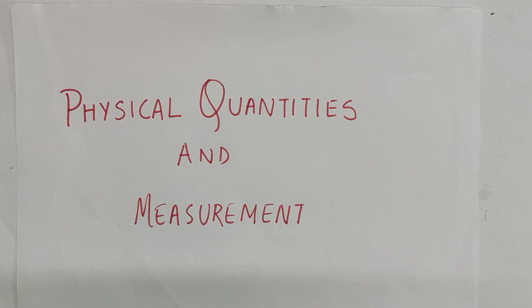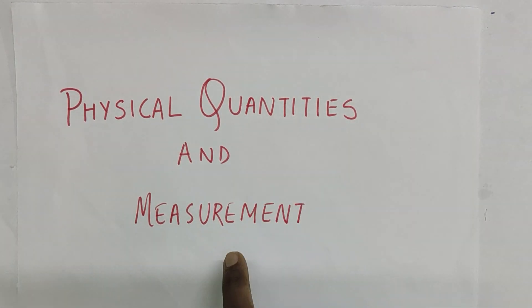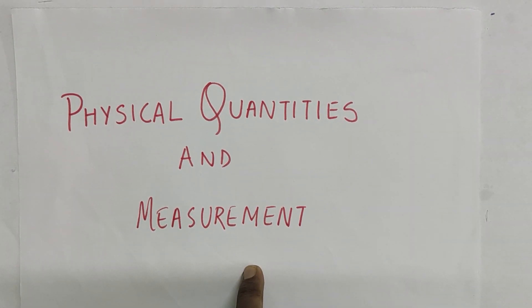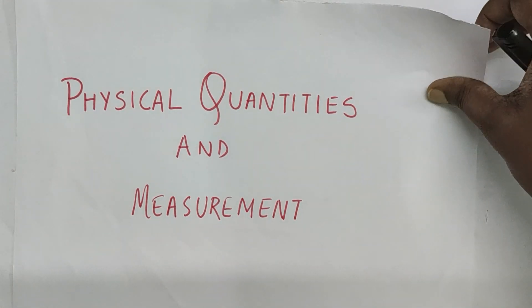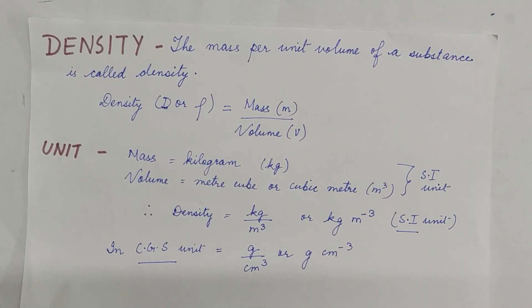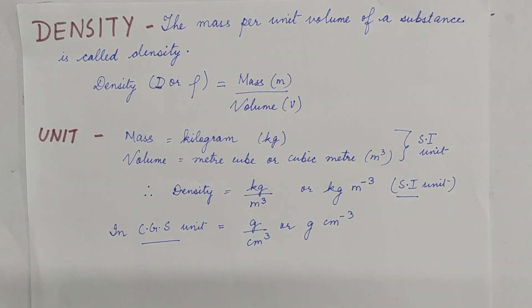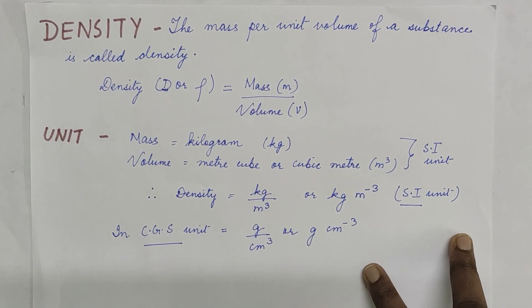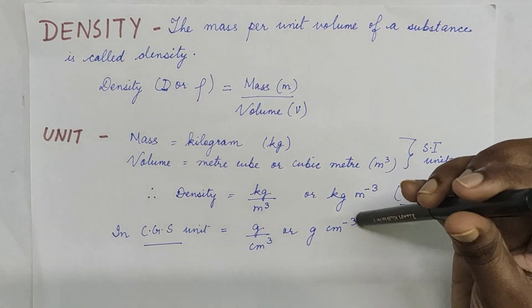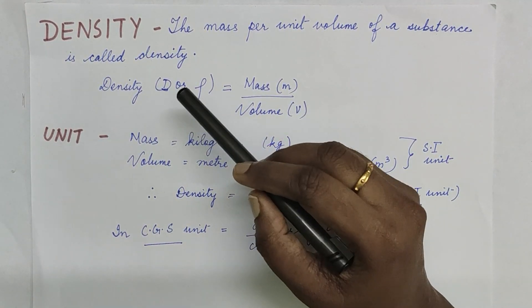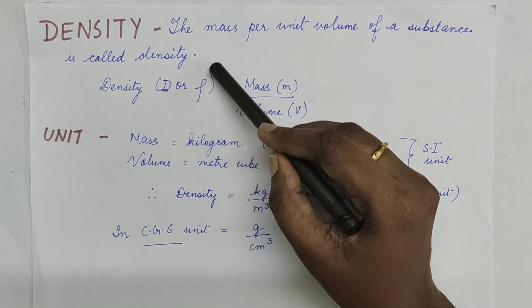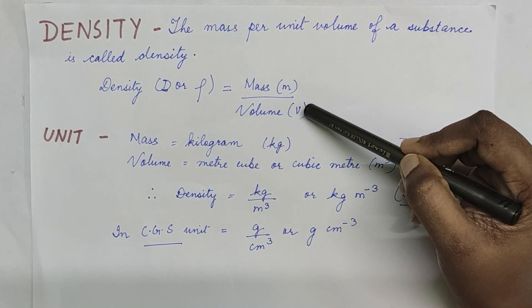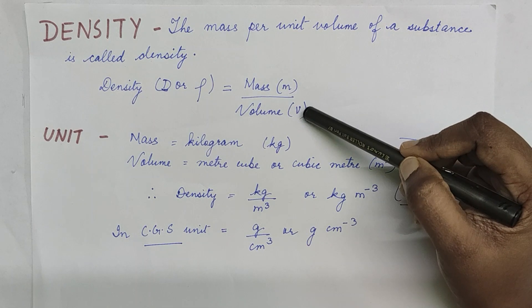Hello friends, today I'm going to teach you about physical quantities and measurement — this is the second chapter of physics. To start with, let us see first about density. As you can see, I have written the definition of density: the mass per unit volume of a substance is called density. Density can be represented by D or rho, and the formula is mass divided by volume.